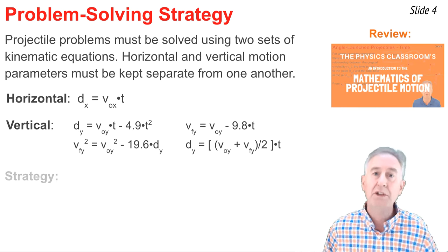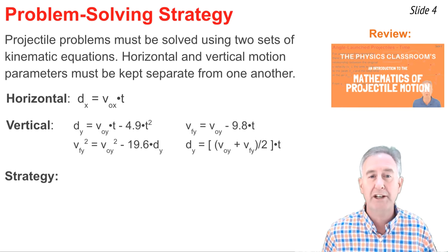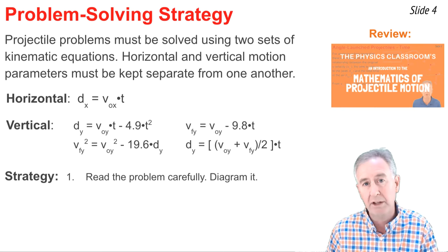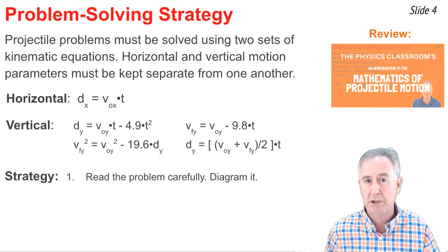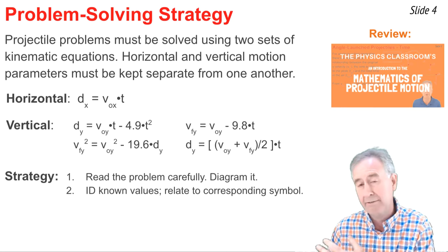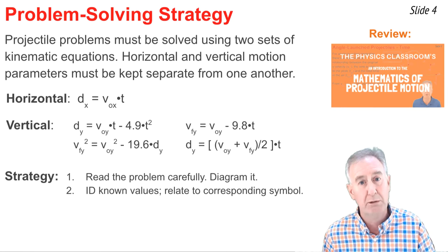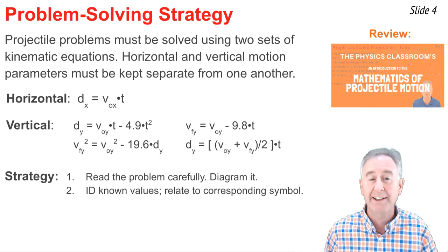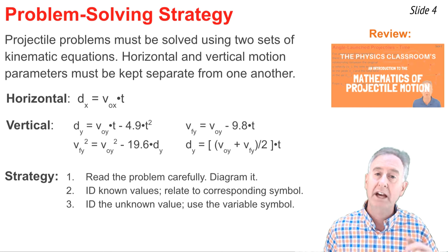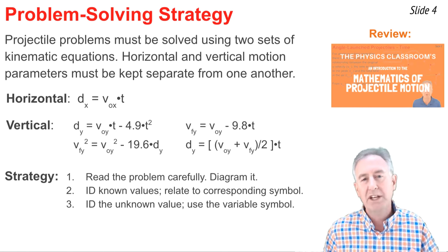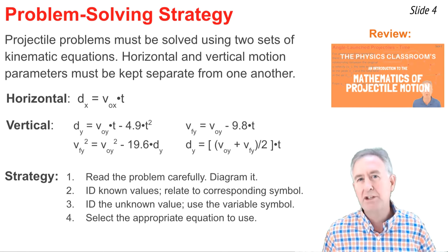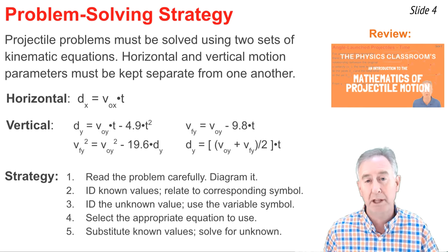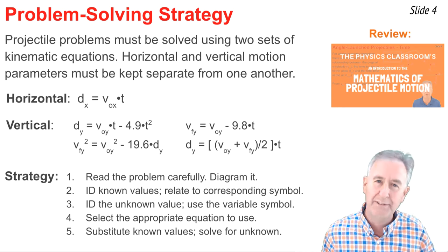Besides knowing the formulas, we also need a strategy. For projectile problems, the classic strategy begins with: read the problem carefully and diagram it to get a mental picture. Second, identify known values and express them in terms of variables, like VO equals 32 meters per second. Third, identify the unknown variable, such as dx equals question mark. Fourth, pick your formula. Fifth, substitute into the formula, perform algebra, and solve for the unknown.